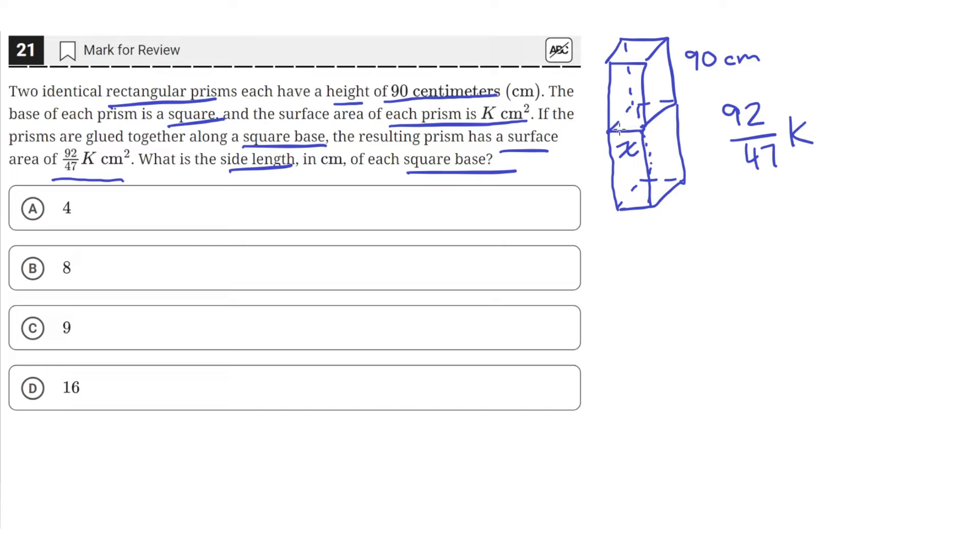We can use this to solve for the value of k. The surface area of this large two rectangular prisms is just 2k, since we're given that the surface area of each prism is k cm². But since we glued them together on this square base right here, we have to subtract that area from both rectangles because they used to have that face but now they don't.